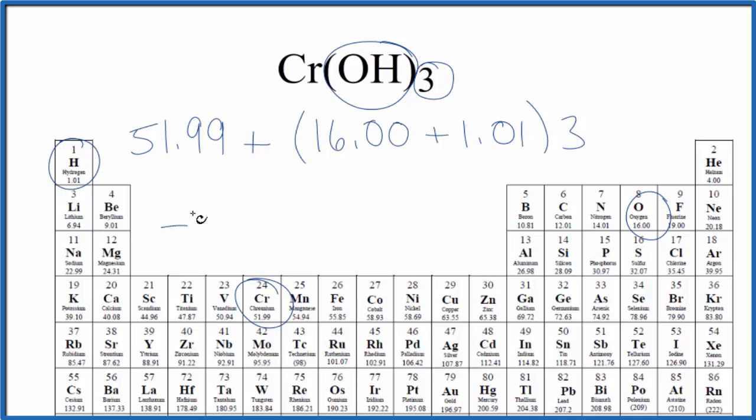We end up with a molar mass for Cr(OH)3, that chromium-3 hydroxide, of 103.02, and the units are grams per mole. That means if we have one mole of Cr(OH)3, chromium-3 hydroxide, it'll weigh 103.02 grams.